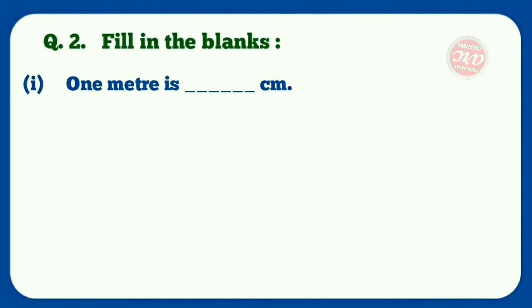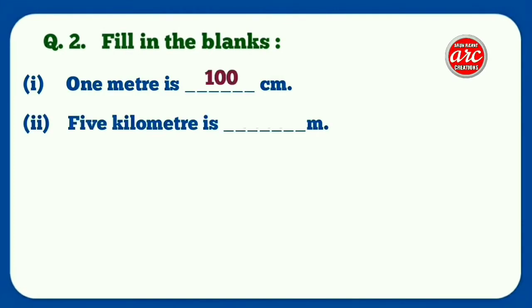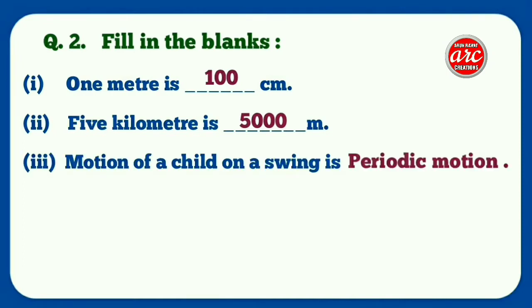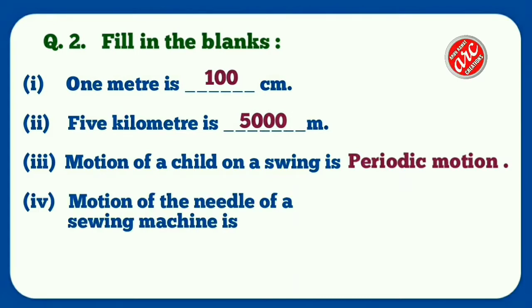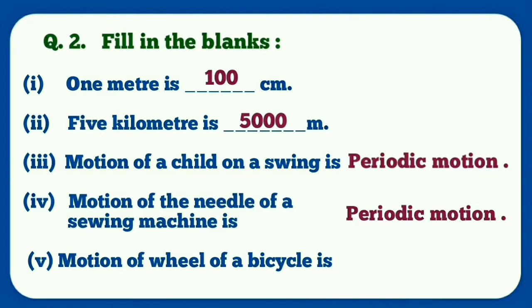Question number two: Fill in the blanks. Number one: one meter is 100 centimeter. Number two: five kilometer is 5000 meter. Number three: motion of a child on a swing is periodic motion. Number four: motion of the needle of a sewing machine is periodic motion. Number five: motion of wheel of a bicycle is rotational as well as rectilinear motion when bicycle is moving on a straight path.